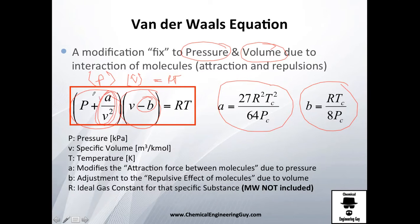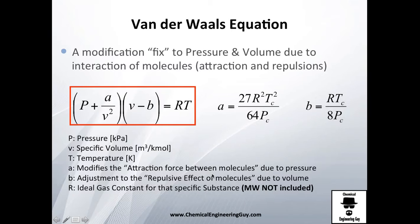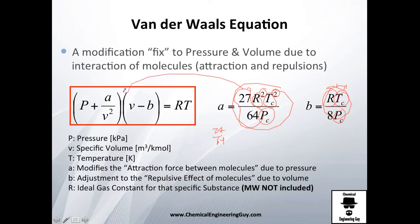The constant A modifies the attraction force between molecules due to pressure, and B is the adjustment for the repulsive effect on volume. These constants are derived from critical temperatures and critical pressures using the ideal gas constant R. Be sure that the formula uses R squared and T squared in the numerator divided by pressure, multiplied by 27/64. Once you calculate those constant values, you can plug them in.